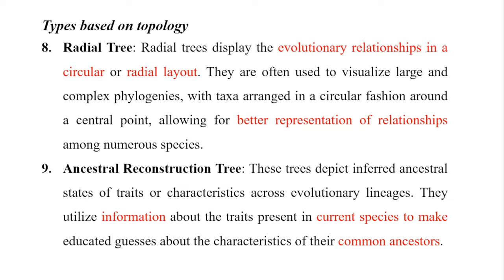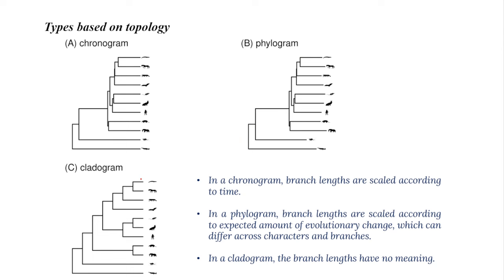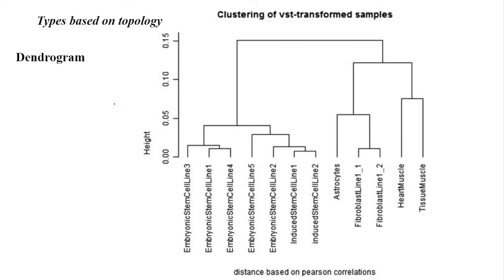A chronogram is represented with a uniform scale. A phylogram shows the distance between branches, indicating the number of substitutions and evolutionary changes due to mutations and aberrations. A cladogram is similar in appearance. A dendrogram represents the same information inverted with different parameters.